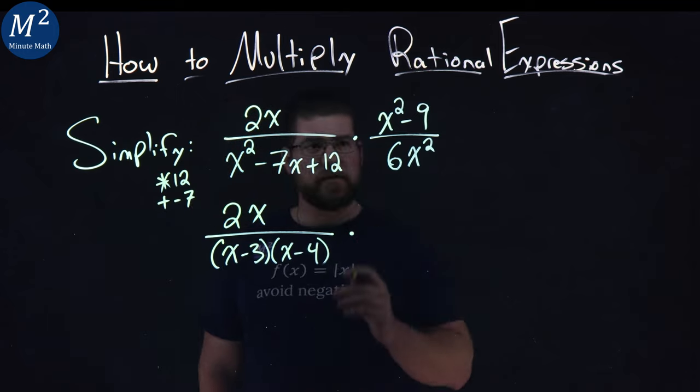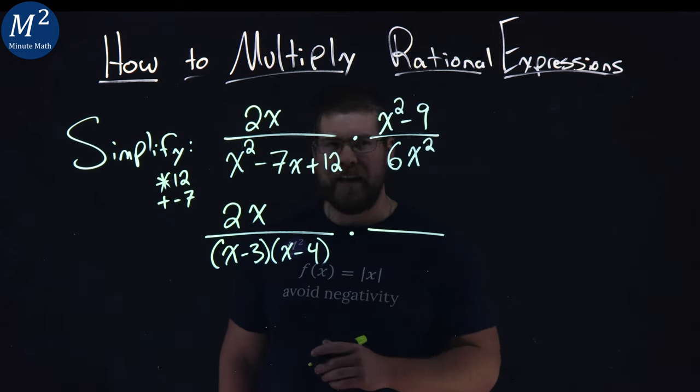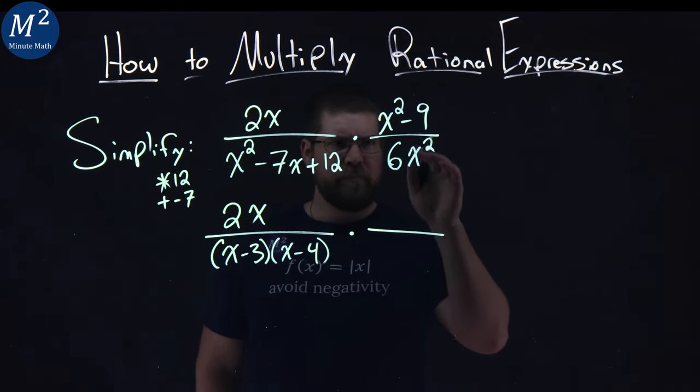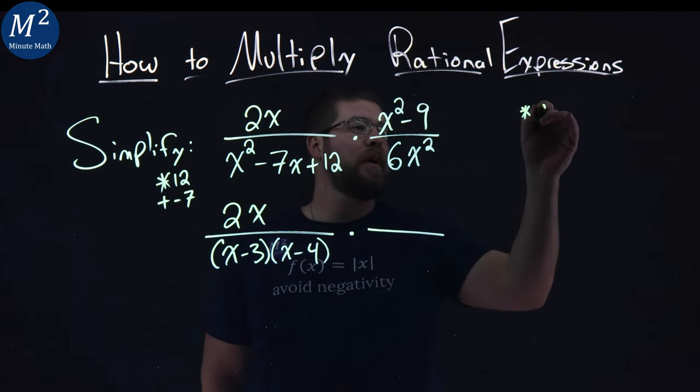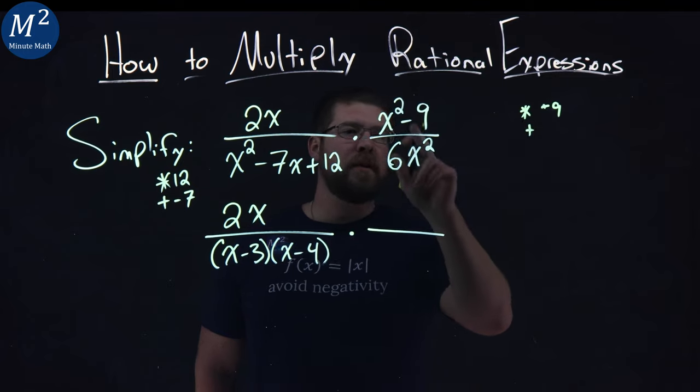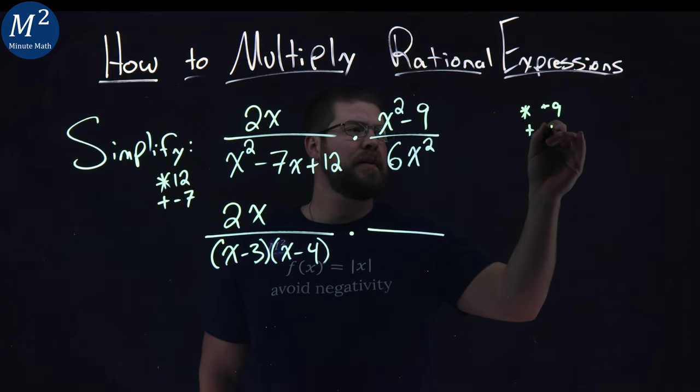The next one over here, we have x squared minus a 9. Can I factor that? Well, if you want to use the same method I have here, multiply is to be a negative 9, but adds to be, there's no b value, so 0.